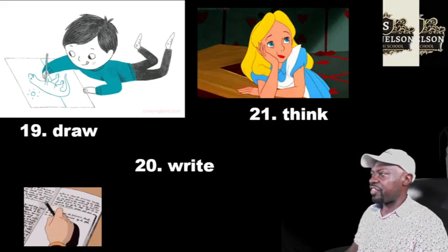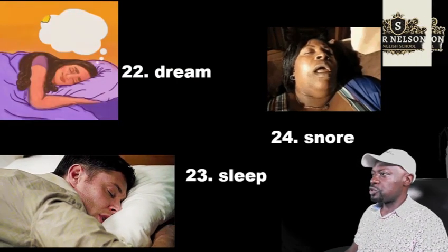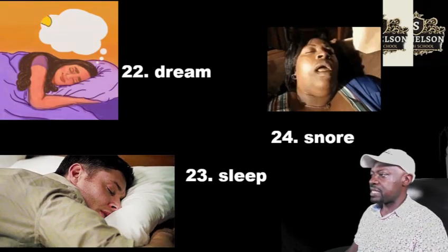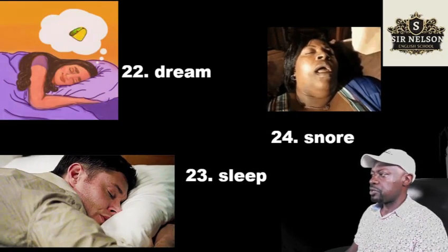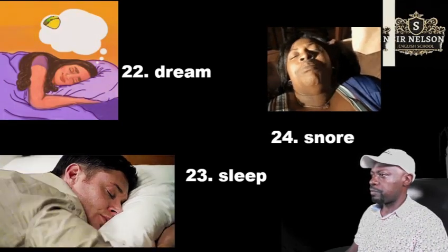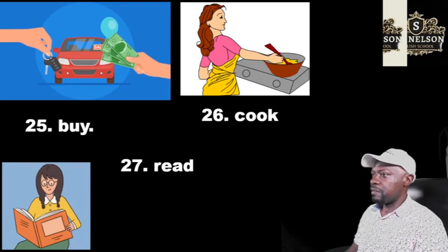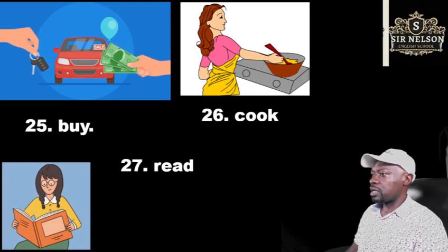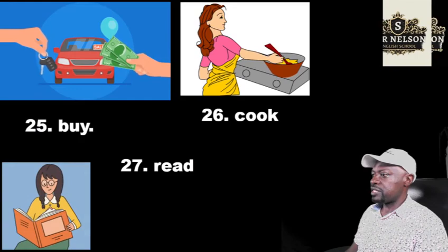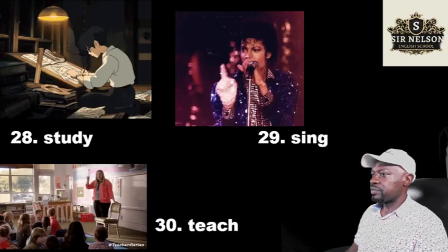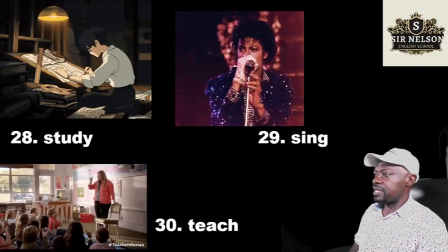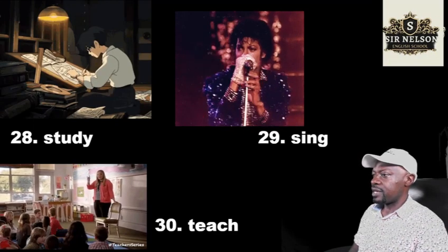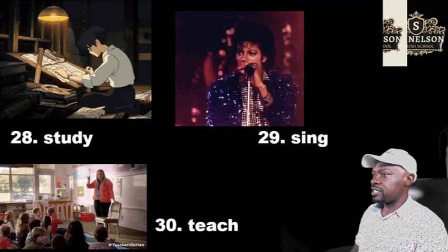Twenty-one: think. Twenty-two: dream. Twenty-three: sleep. Twenty-four: snore. Twenty-five: buy. Twenty-six: cook. Twenty-seven: read. Twenty-eight: study. Twenty-nine: sing. Thirty: teach.